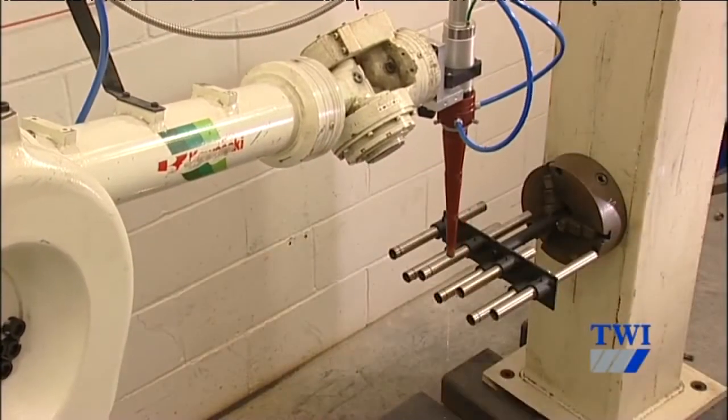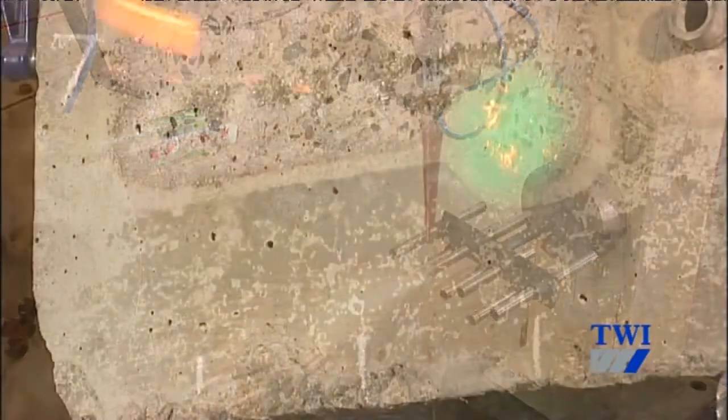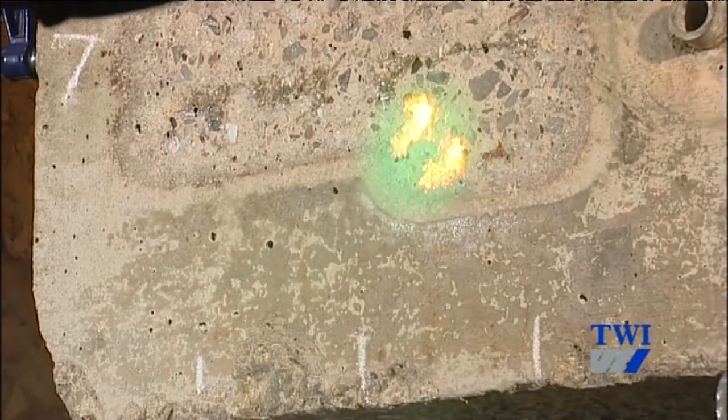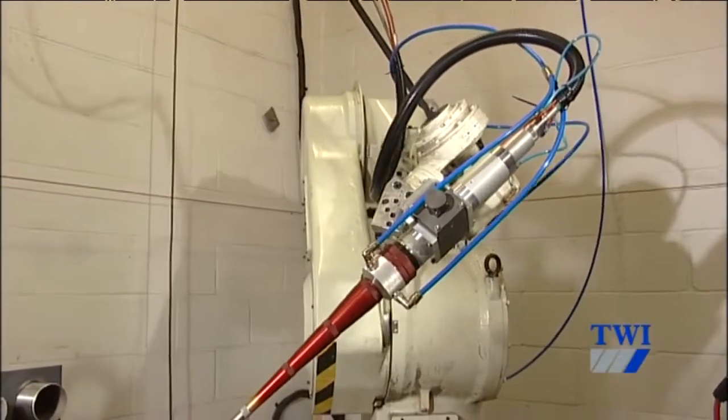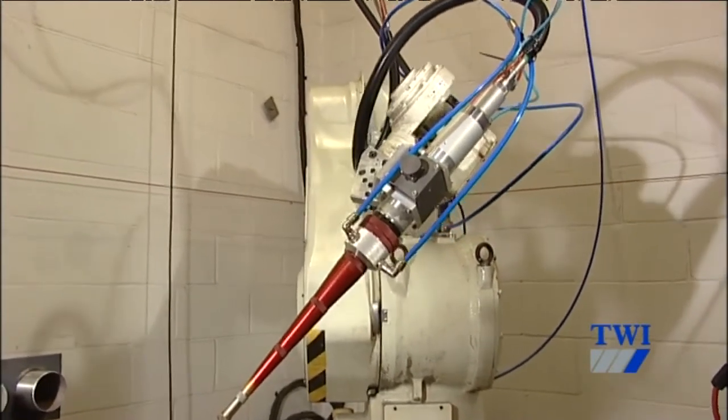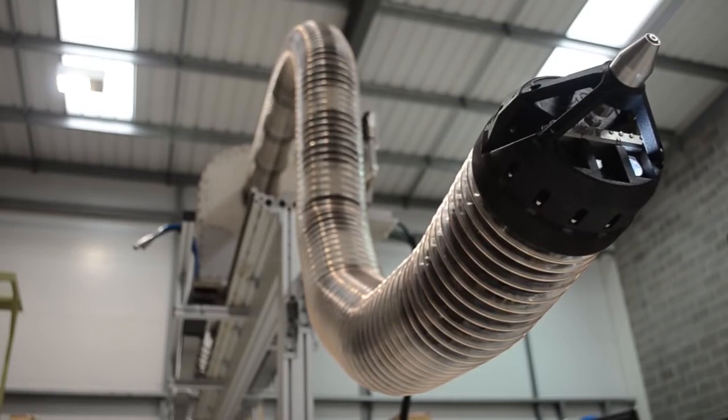The first application of laser cutting in the nuclear environment started in 2011, but to sufficiently demonstrate cutting on radioactive material has taken over three years. Now, three years to move from concept to active demonstration might seem long in our terms, but for the nuclear industry in the UK, this is light speed.